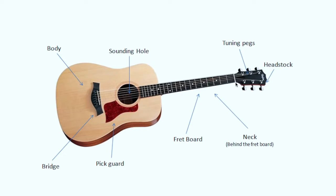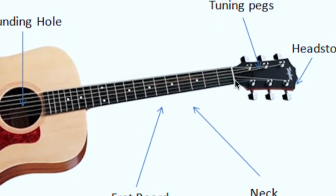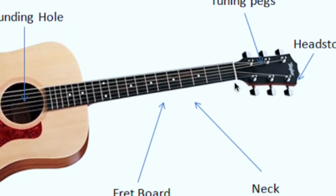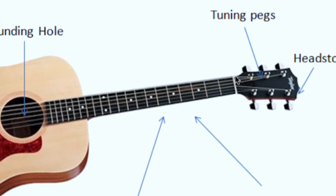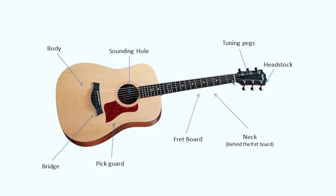This part, although it is not labeled in the diagram, I'll zoom in for you. This white part from where the string passes from the neck to the headstock is known as the nut.